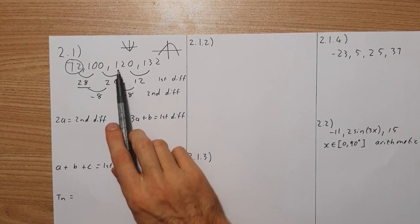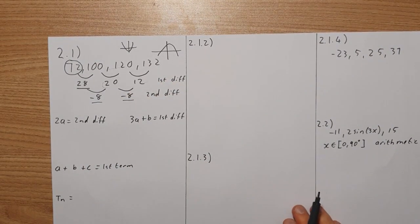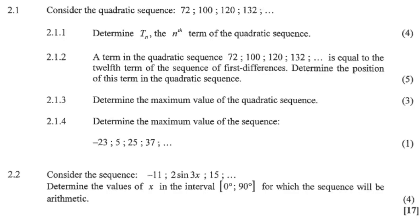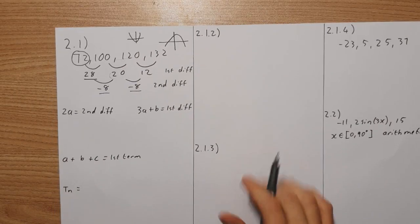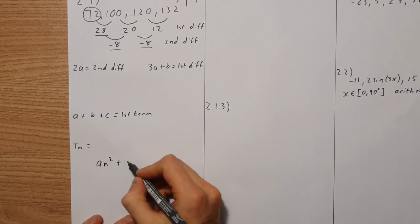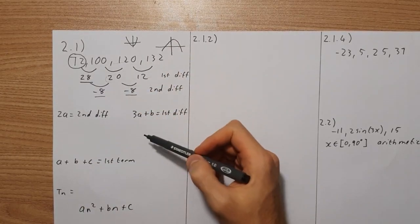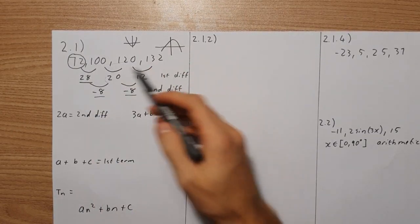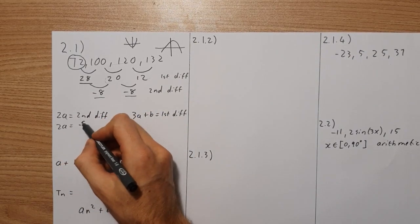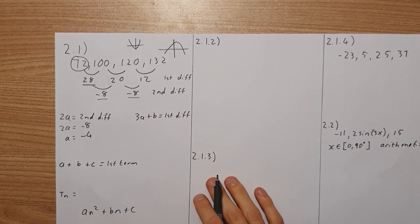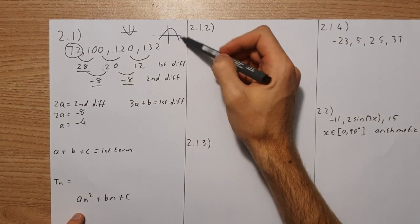Question 2.1.1 says: determine Tn, the nth term of the quadratic sequence. The general solution is Tn = An² + Bn + C, so we need to find A, B, and C. If you're not sure how to do this, I have a video that explains it. To find A: 2A equals the second common difference, so 2A = −8, which means A = −4. We can immediately see that A is negative 4, so it's going to be a decreasing or upside-down quadratic.